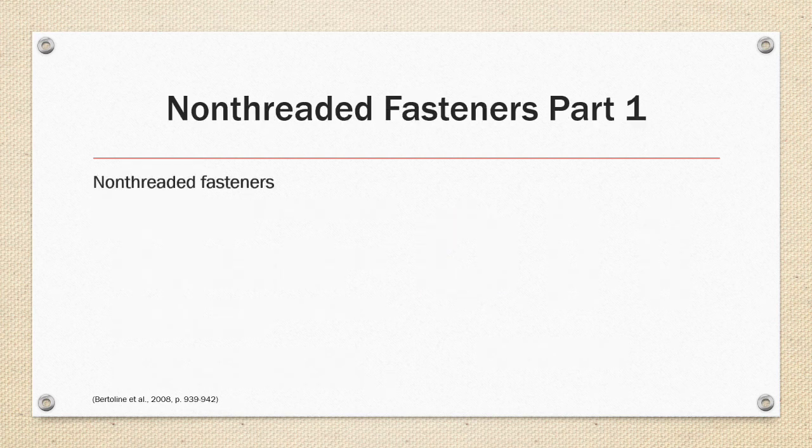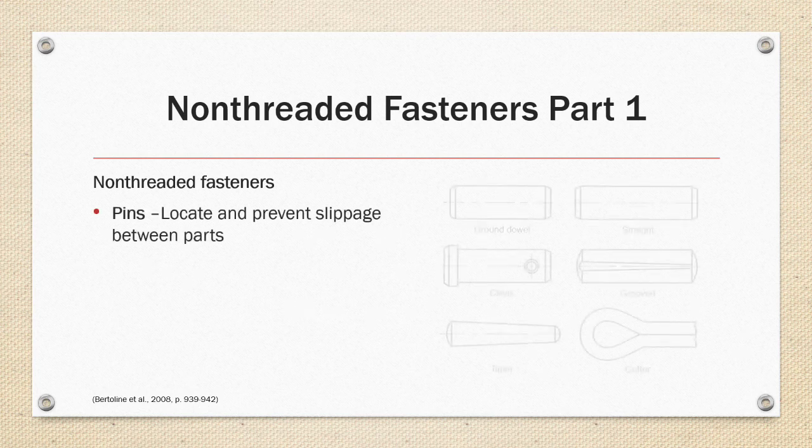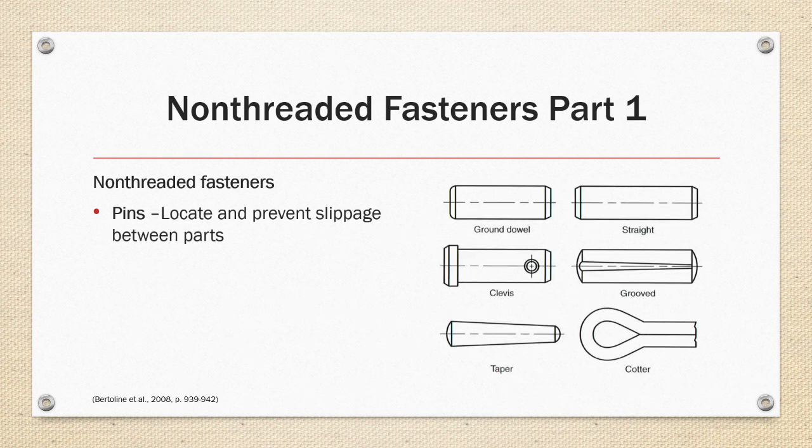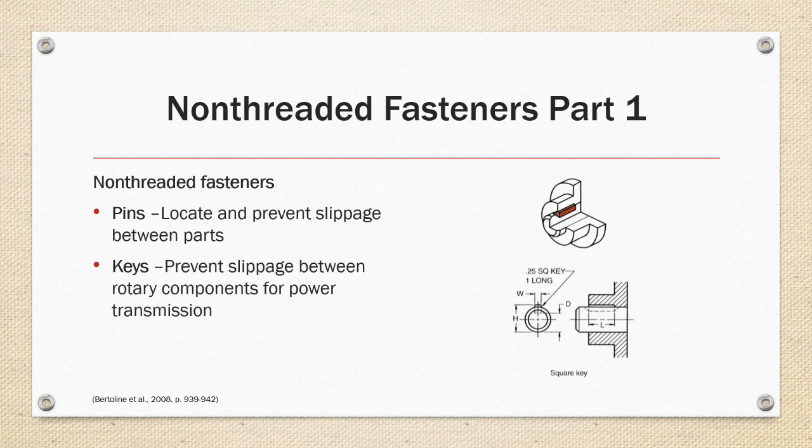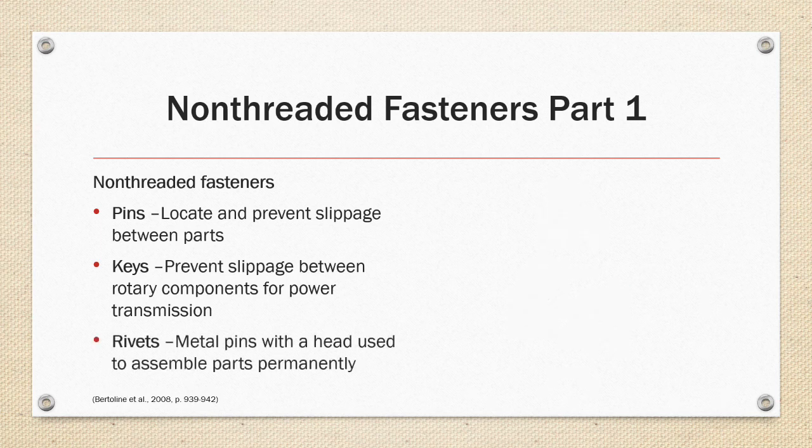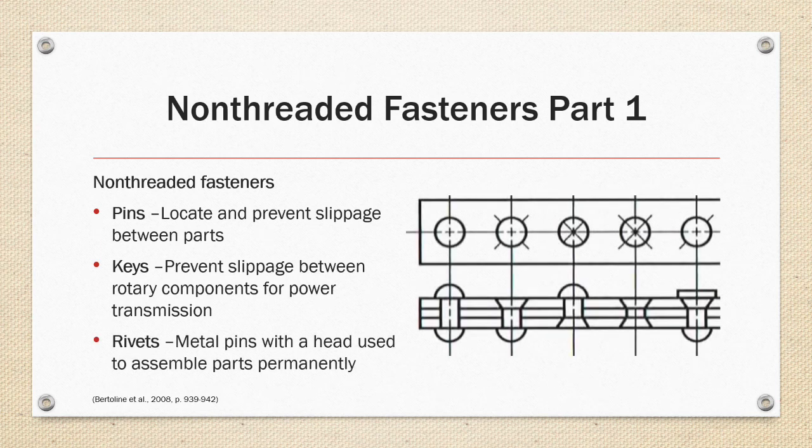Non-threaded fasteners part 1. Non-threaded fasteners can include pins that locate and prevent slippage between parts, keys that prevent slippage between rotary components for power transmission, rivets which are metal pins with a head used to assemble parts permanently and hold the components together through deformation and friction of the rivet.